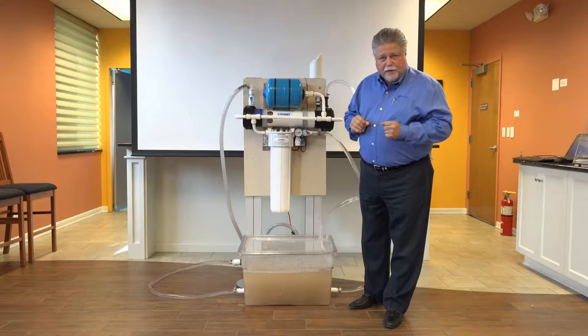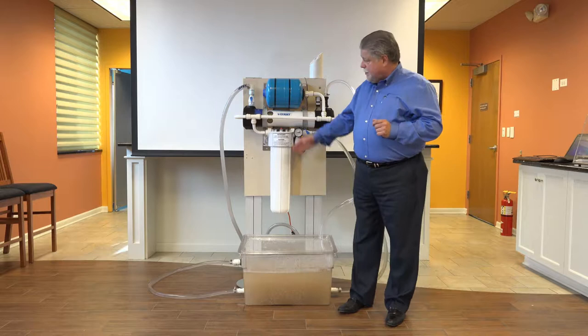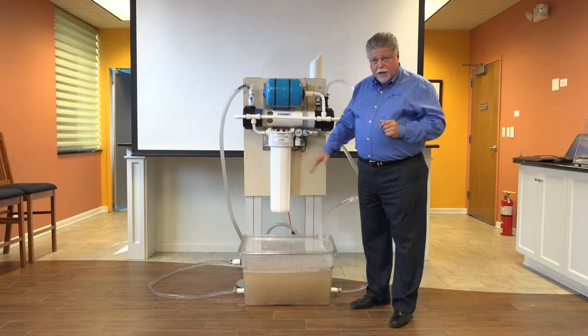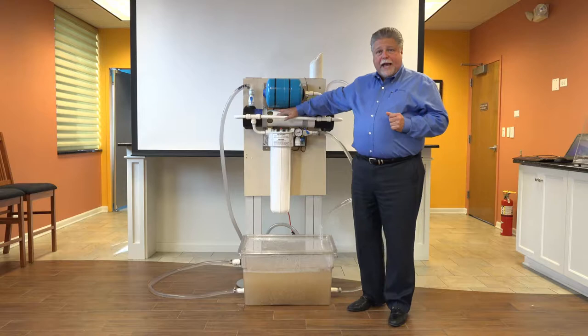The way that the system works right now is the water is coming out from the tank, it's going into a pump in the back. From the pump, we are bringing the water up into the inlet valve of our system. It is going through this cartridge. From this cartridge, it's filling this tank, and after it fills this tank, it goes through this cartridge and then directly to your equipment.